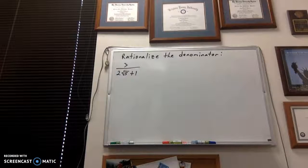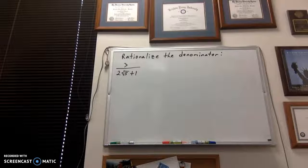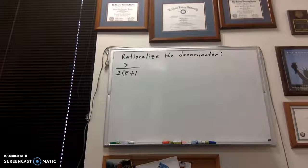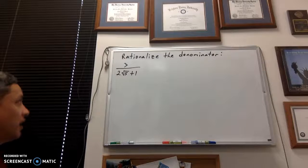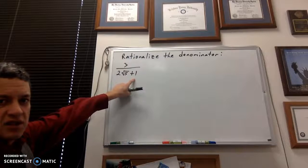This one's going to be different, though. I'm going to take 3 over 2 root 5 plus 1. So the difference with what you see here, what we were doing in part one, is I've got two terms in the denominator.